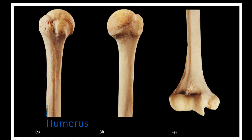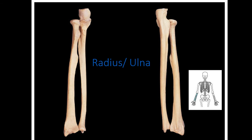Moving down to the distal end of the humerus, there is a small depression called the coronoid fossa, which receives the coronoid process when the elbow bends into flexion. We also have the lateral and medial epicondyles on either side. Connecting with the ulna, we have the coronoid process going into that fossa, and the olecranon process going into the olecranon fossa on the humerus.